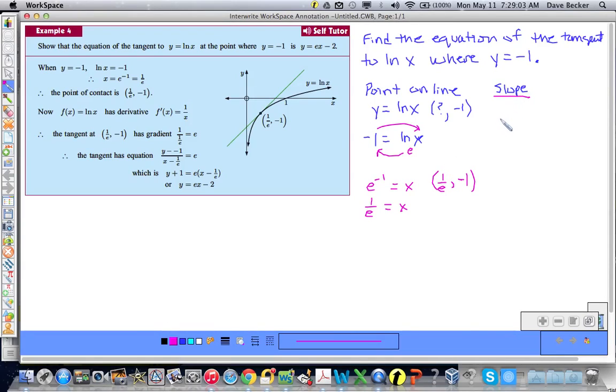Well, to find the slope, I have to take the derivative of the original function, so the original function is the natural log of x. I take the derivative of that, that's equal to 1 over x, so I find y prime of the x value I'm interested in, and that would be 1 over e, so that would be 1 over 1 over e, which is equal to e, boys and girls, so now I have my point and I have my slope or gradient.